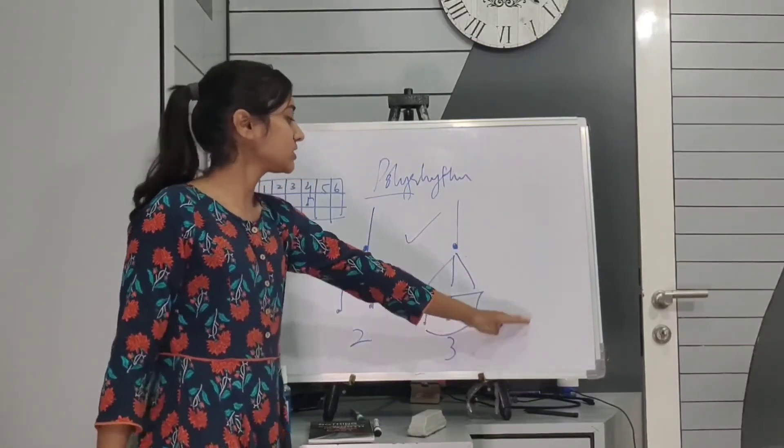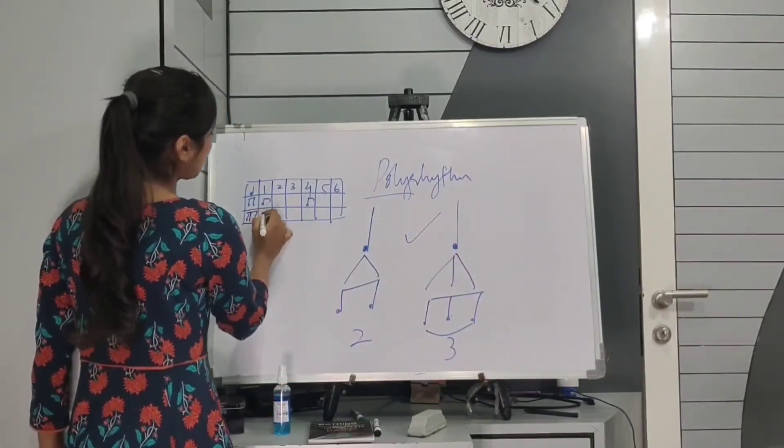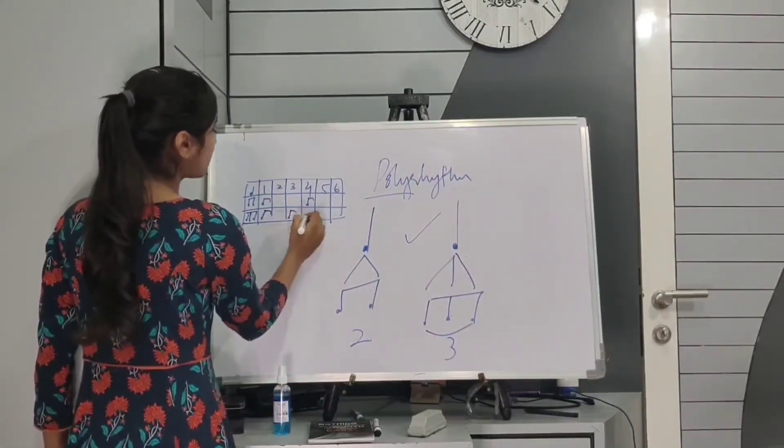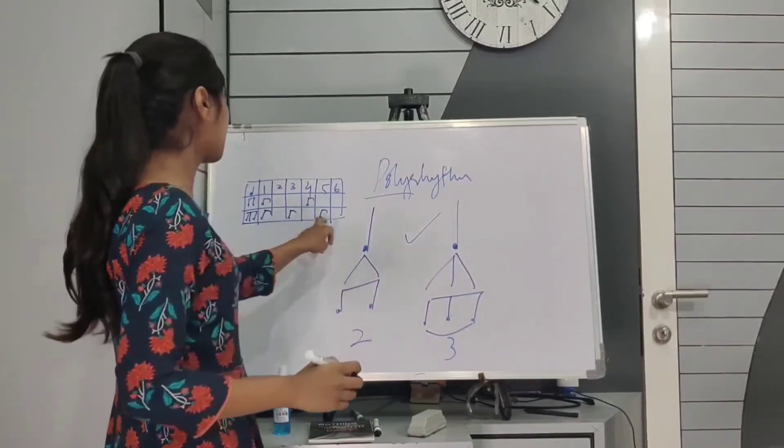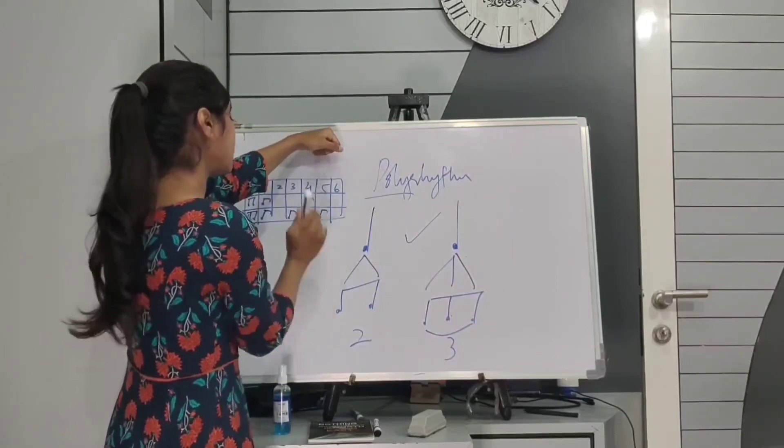Now I have to distribute three notes equally in one beat. So I'll distribute it accordingly. So on one, three and five equally distributed. One, two, three, four, five, six. One, two, three, four, five, six. One, two, three, four, five, six.